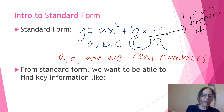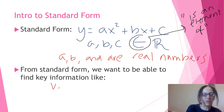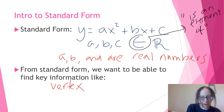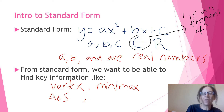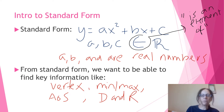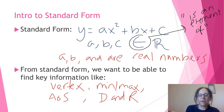From standard form, we want to be able to find key information — the vertex, the axis of symmetry, the minimum and maximum, which ties into the previous lesson, and also domain and range. This lesson will take us on a deeper dive into what domain and range are, and ways we can visualize them so we can become more adept at identifying them.